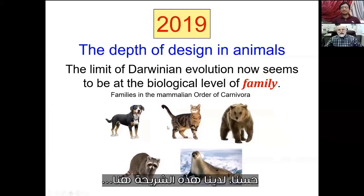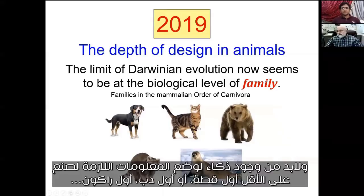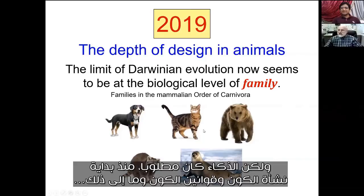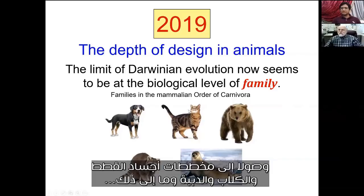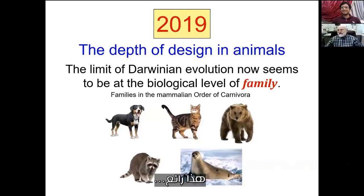This slide here is just that — it had to be designed. Intelligence had to put all the information necessary to make at least one primordial cat or bear or raccoon, and then they could diversify from that. But intelligence is needed all the way from the beginning of the universe, the laws of the universe, and so on, all the way down to the plan for cats versus dogs and bears. And after that, Darwin's mechanism can take over.